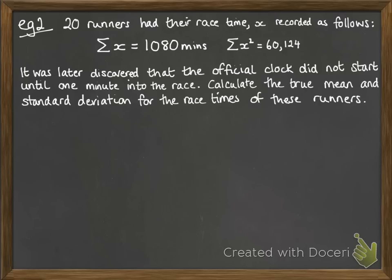Okay, and this example puts it into context. So we've got 20 runners who run a race, and they have their time recorded, and that's x. We have the total of being 1,080 minutes, and the sum of the x squared is 60,124.